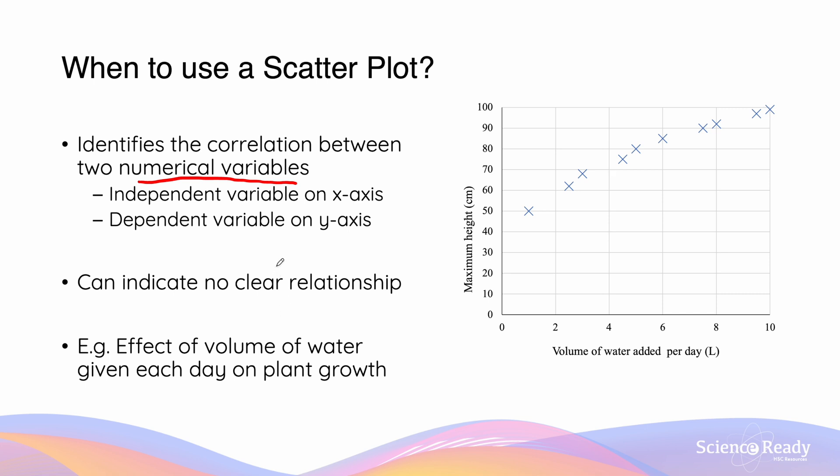While the scatter plot can help us with identifying correlations, it can also help us identify no clear relationship or non-correlations. So an example of when we might use a scatter plot is if we wanted to examine the effect of the volume of water given each day on plant growth. Imagine we are adding a different amount of water per day, and we're looking at how the plant is growing over a period of time. Here we have two sets of quantitative data, and therefore we are going to use the scatter plot.